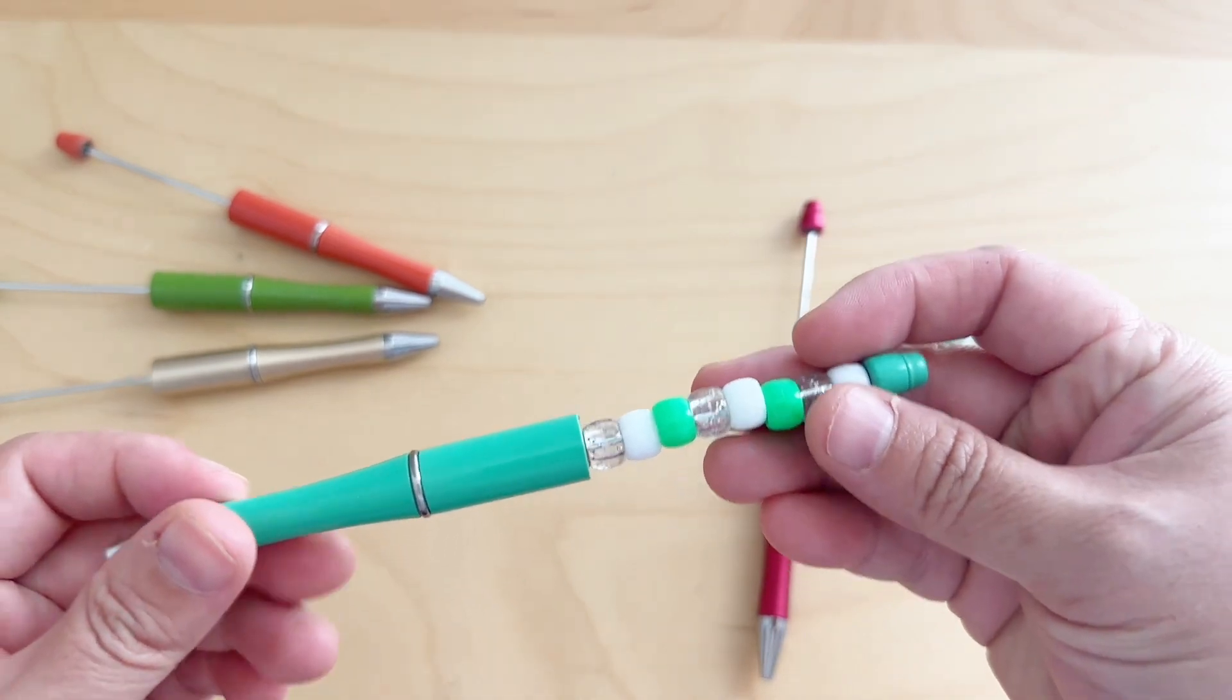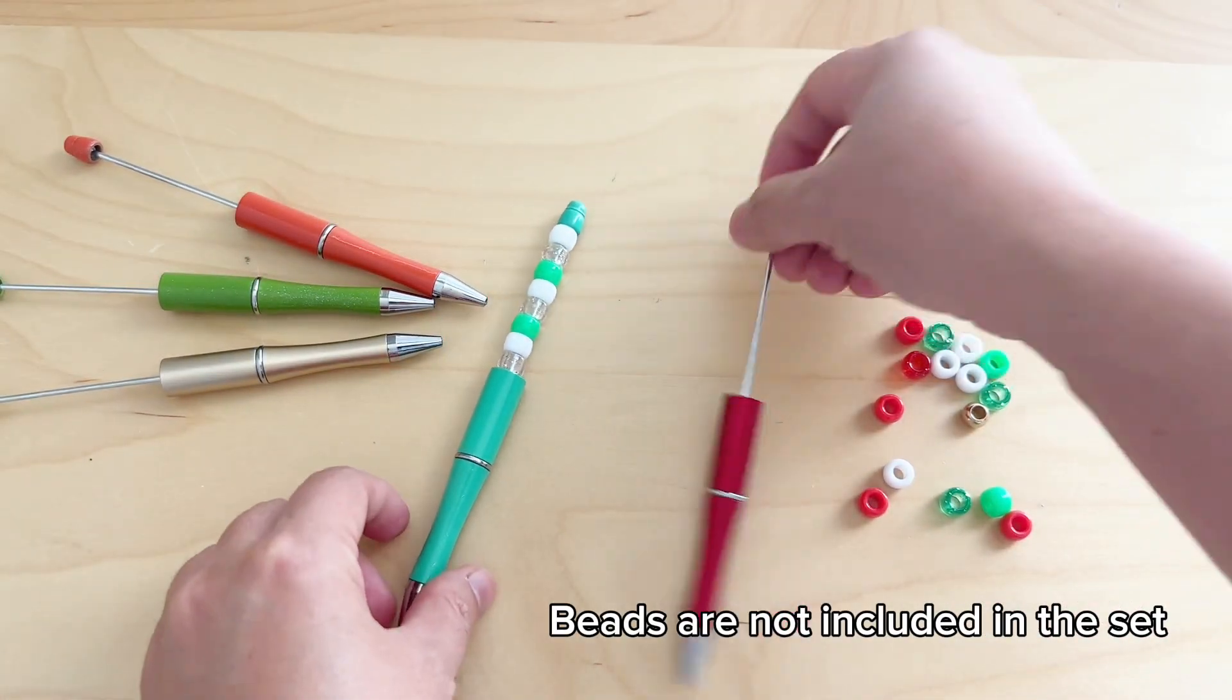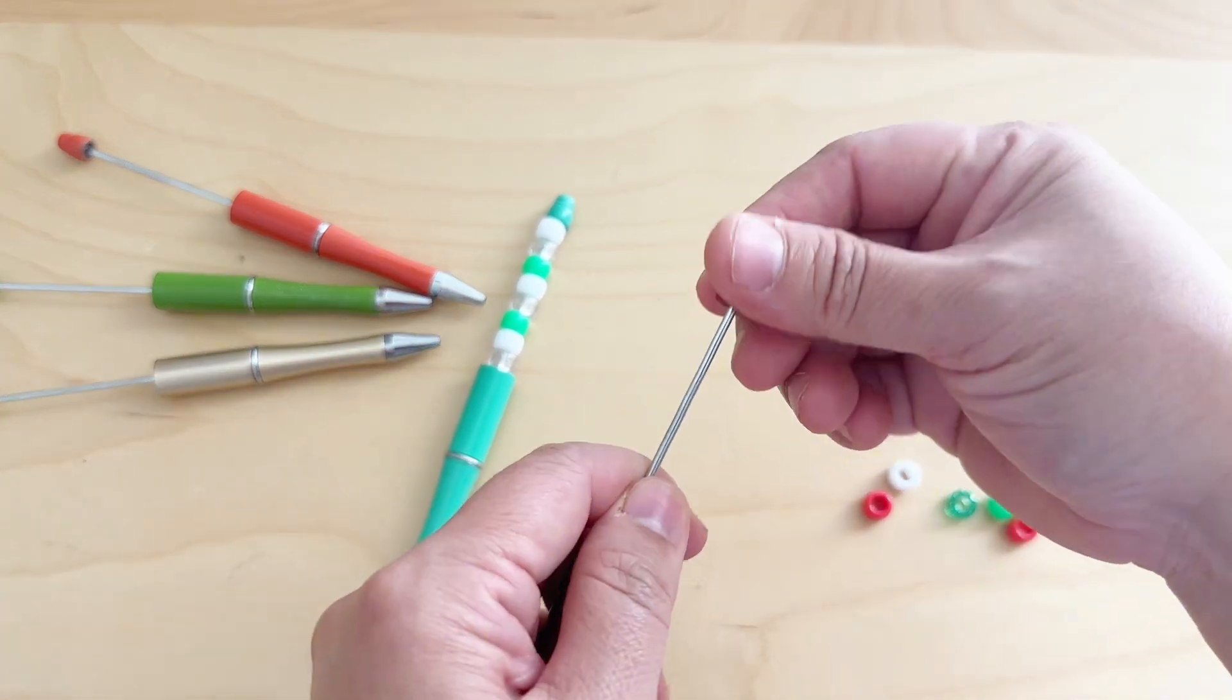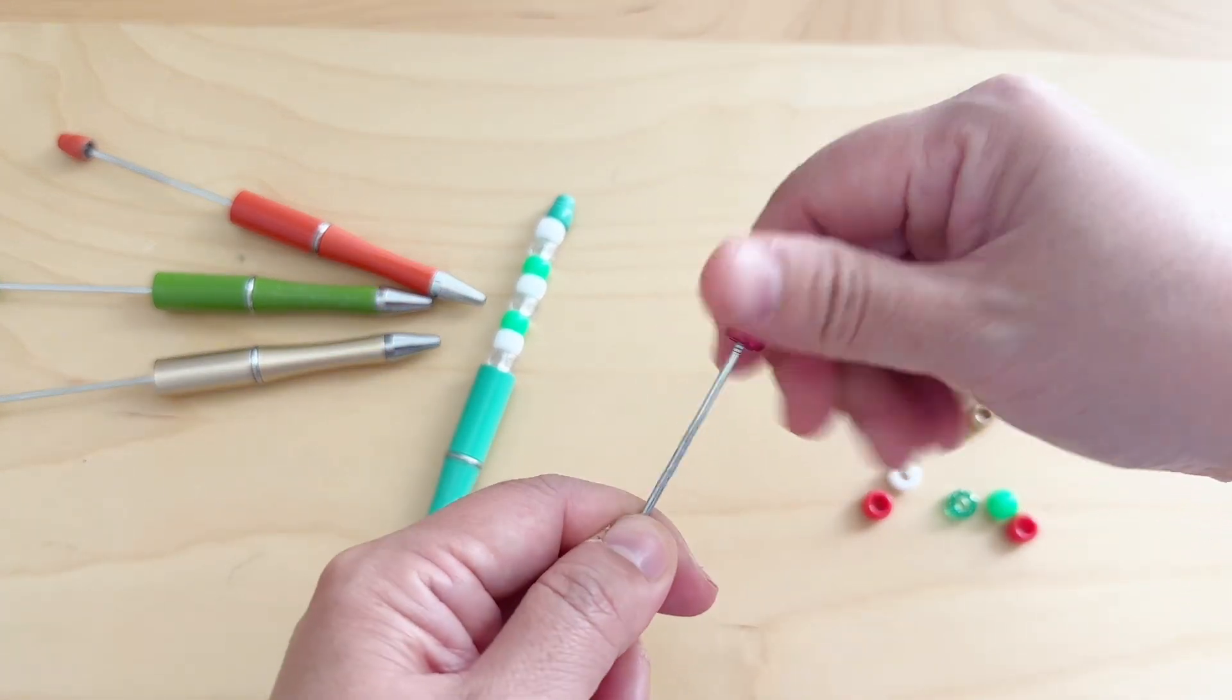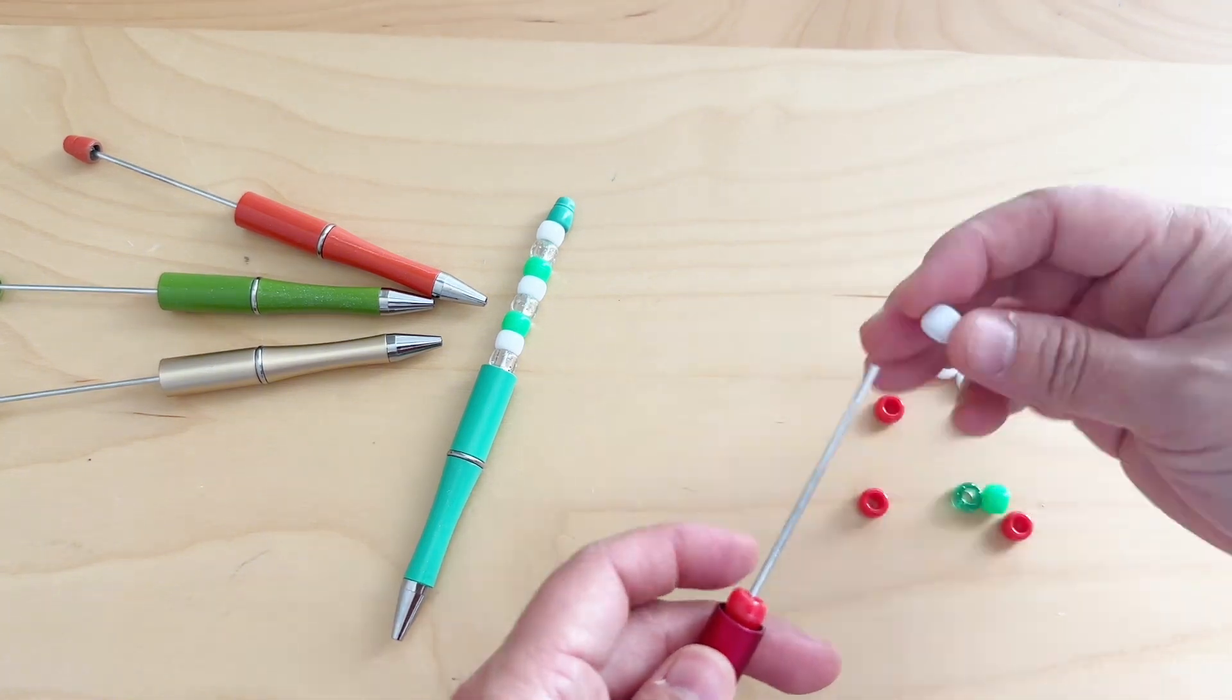The best and most fun part of this pen is that you can decorate it with any beads you have. To do that, expose the rod by unscrewing the tip of the pen and start inserting the beads like this.